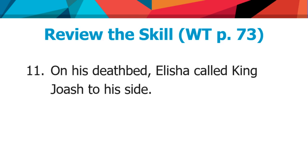Now let's jump to the next exercise in your worktext, which combines all the types of sentence patterns we've looked at — so there are five possibilities for the sentence pattern in each of these sentences. Let's work through these together. 'On his deathbed, Elisha called King Joash to his side.' We're always going to find the subject and verb first — Elisha called. Elisha called whom? King Joash — and that's going to be a direct object because this is definitely a transitive verb. So our sentence pattern is subject–transitive verb–direct object.